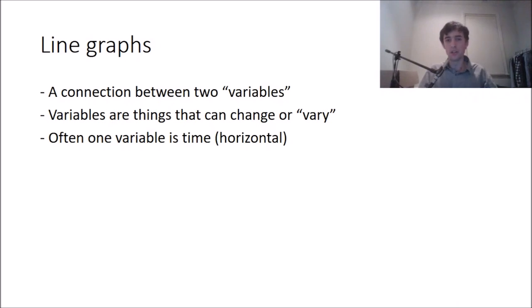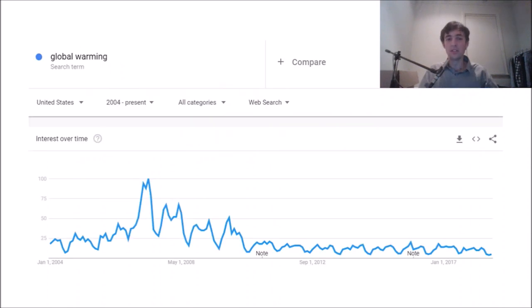So popularity is a variable. It can change. And you can also look at time from left to right. And time is changing as you go from left to right on the graph. And popularity is changing as you go up and down on the graph. So popularity and time, they're both variables. Alright. So often one variable is time. And if you're drawing one of these graphs and you have time as one of your variables, it should be horizontal.